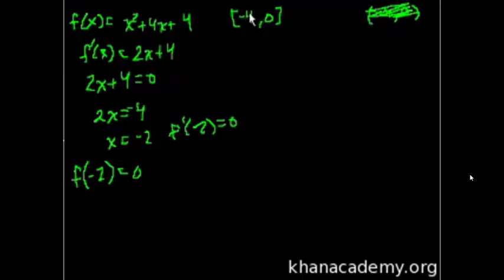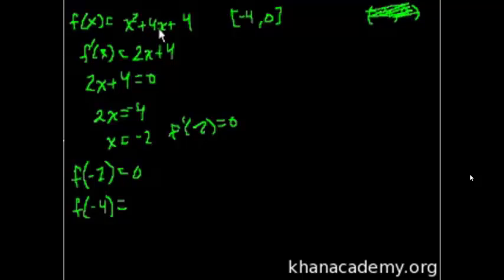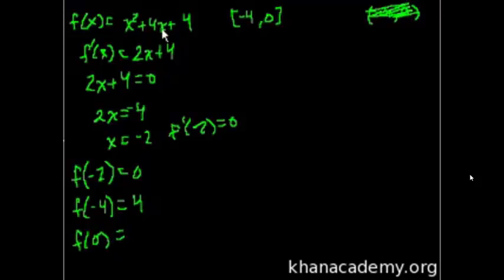Let's evaluate the function at the endpoints of this interval. f of minus 4 is equal to minus 4 squared, which is 16, minus 16, plus 4 — so f of minus 4 is 4. And what's f of 0? f of 0 is equal to 0 plus 0 plus 4, so f of 0 equals 4.